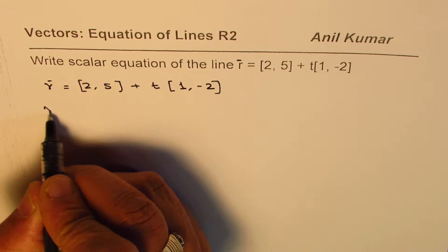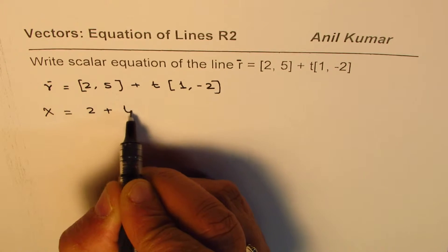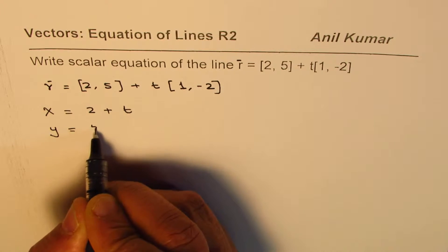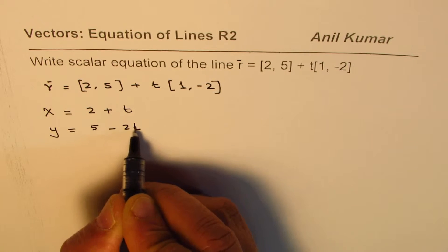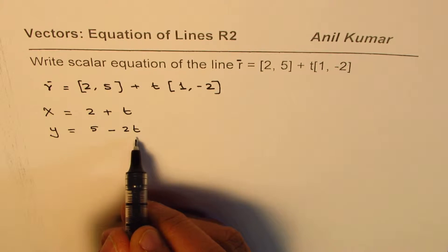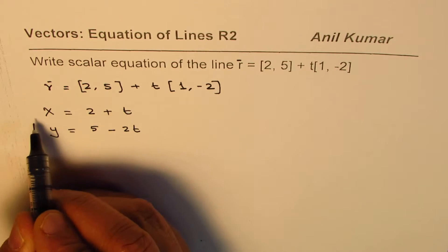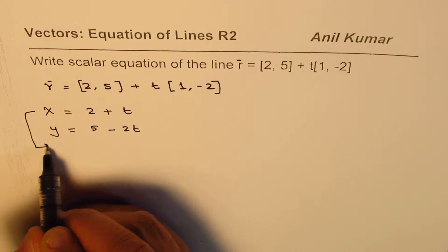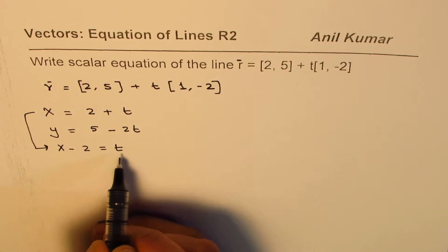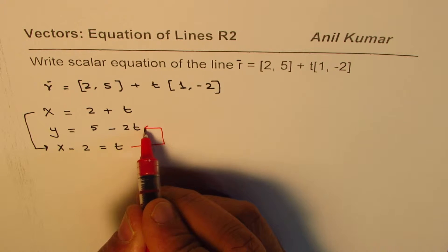I will show you the first method which is x equals 2 plus t, that is the parametric equation, and y equals 5 minus 2t. Now using these two equations if we eliminate t we get scalar equation. From the first equation we can write x minus 2 equals t, and we can substitute this value of t in our second equation.